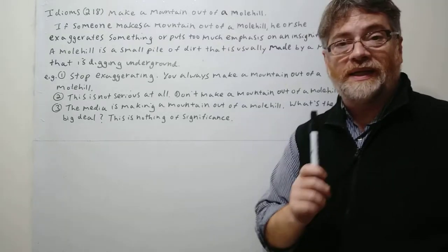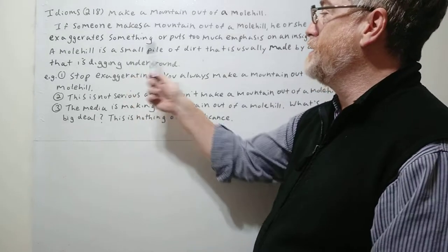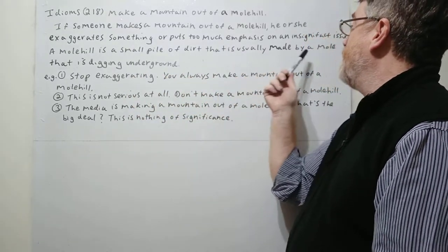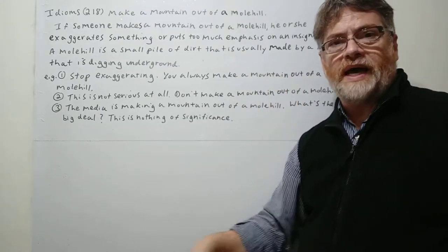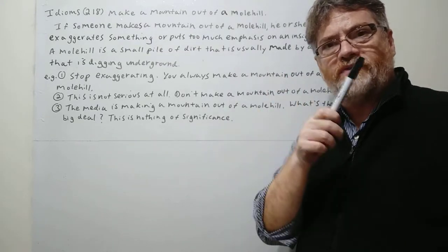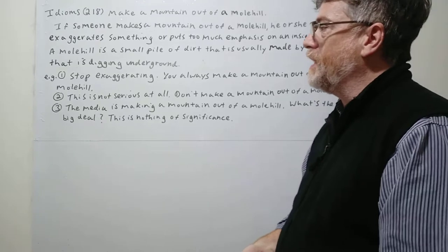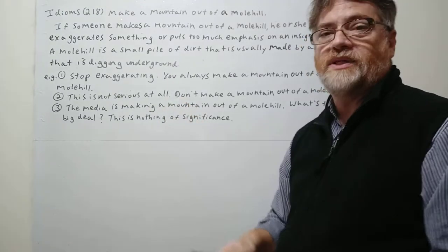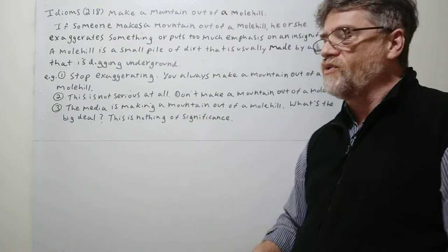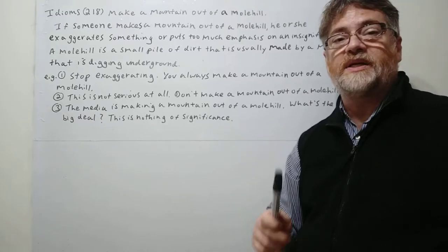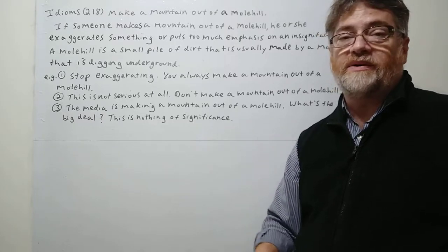Now a molehill—literally a molehill is a small pile of dirt that is usually made by a mole. A mole is an animal that lives underground. They usually have very poor eyesight, digging underground. So it's very small. So of course if you say somebody's making a mountain out of a molehill, it means you're exaggerating.